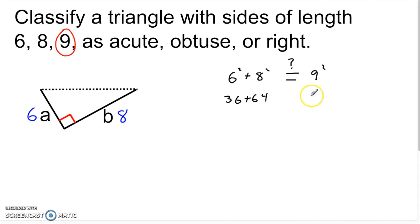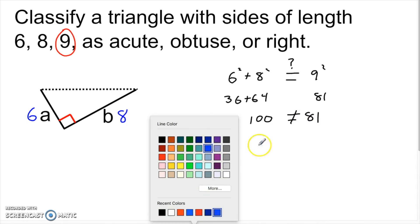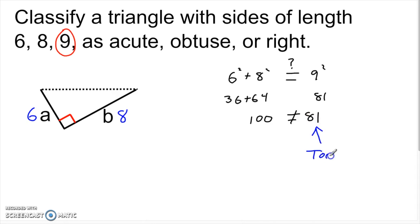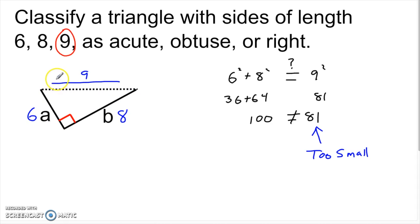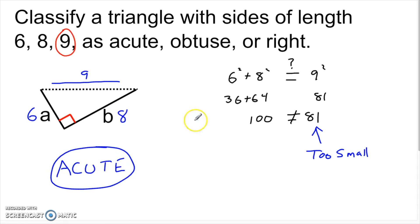Our C is too small — I would need c squared to be 100 to get a right triangle, but it's only 81. So when I finish the picture, the 9 is not big enough to make a right triangle — for a right triangle it would have to go all the way across and it just doesn't make it. That angle has to get smaller, making this an acute triangle. We started with three sides, checked the Pythagorean theorem, and found the largest side wasn't big enough — so this must be an acute triangle.